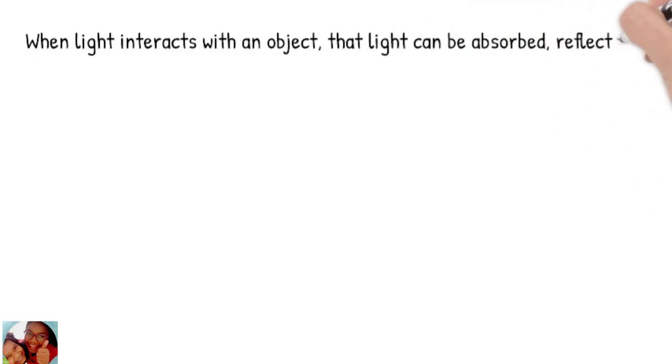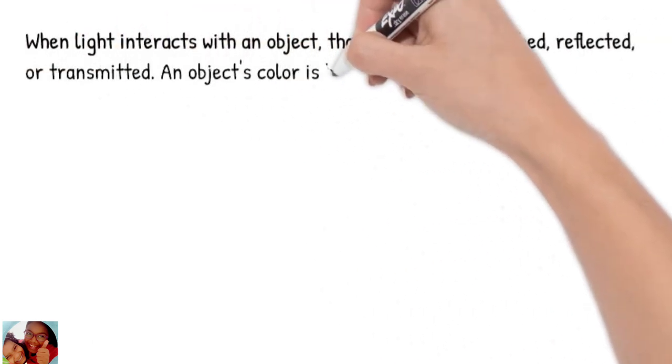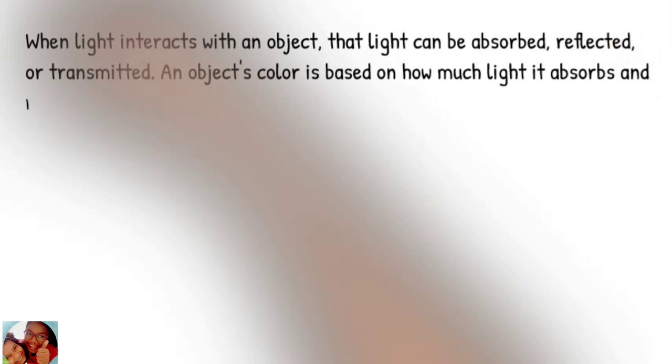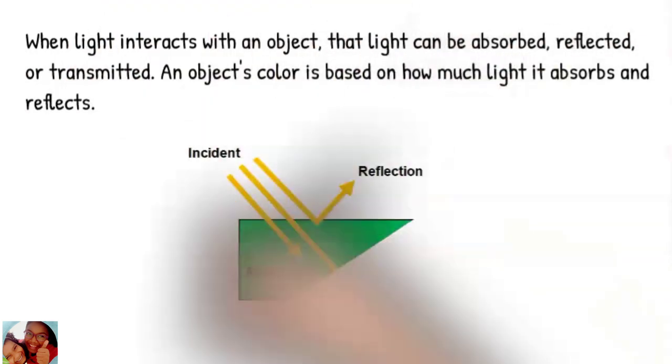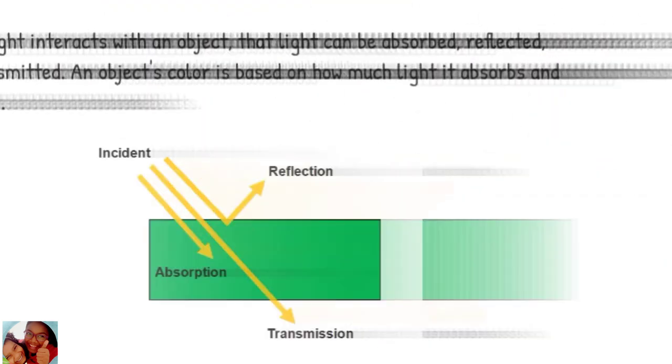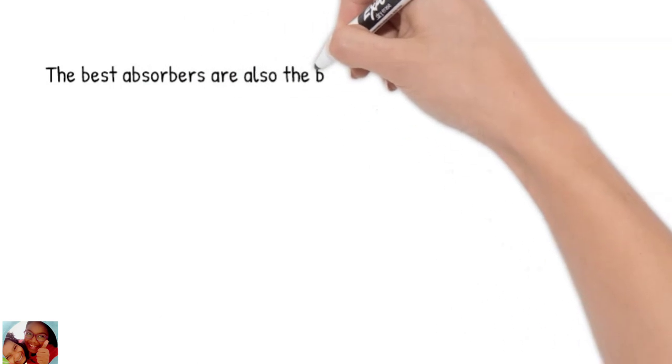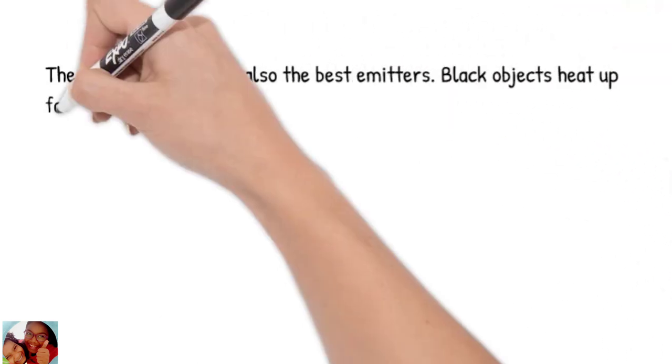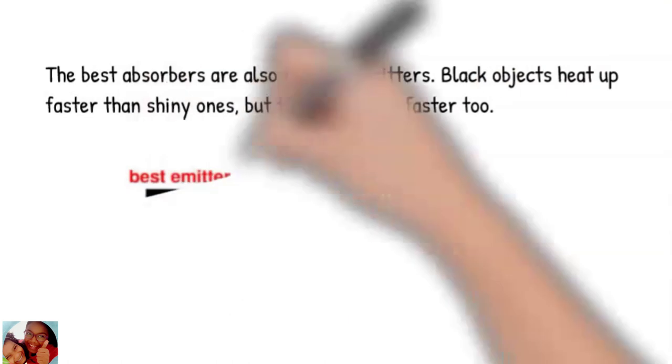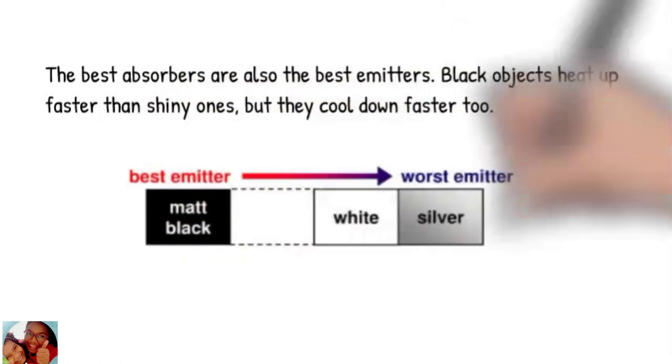When light interacts with an object, that light can be absorbed, reflected or transmitted. An object's color is based on how much light it absorbs and reflects. The best absorbers are also the best emitters. Black objects heat up faster than shinier ones, but they cool down faster too.